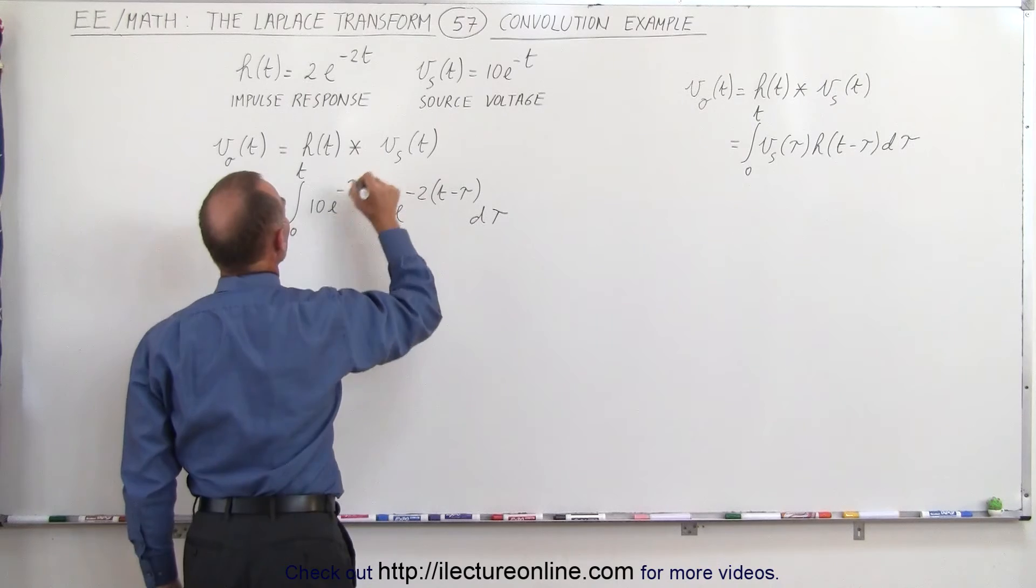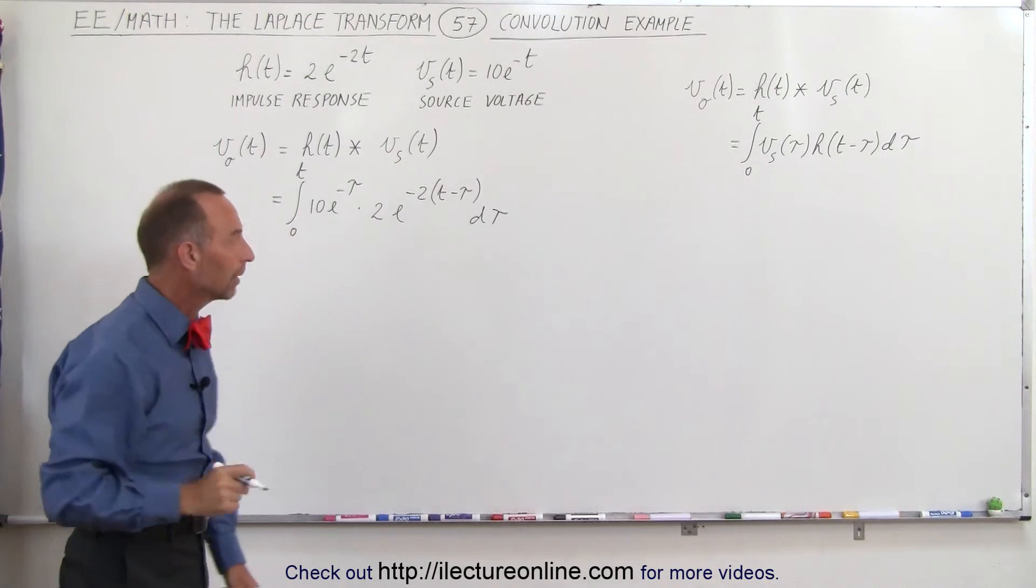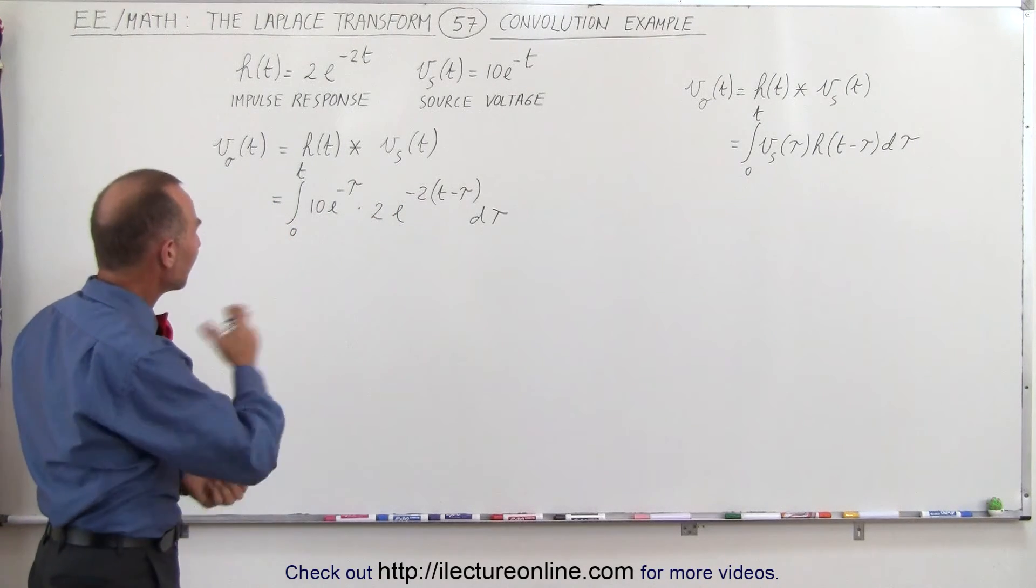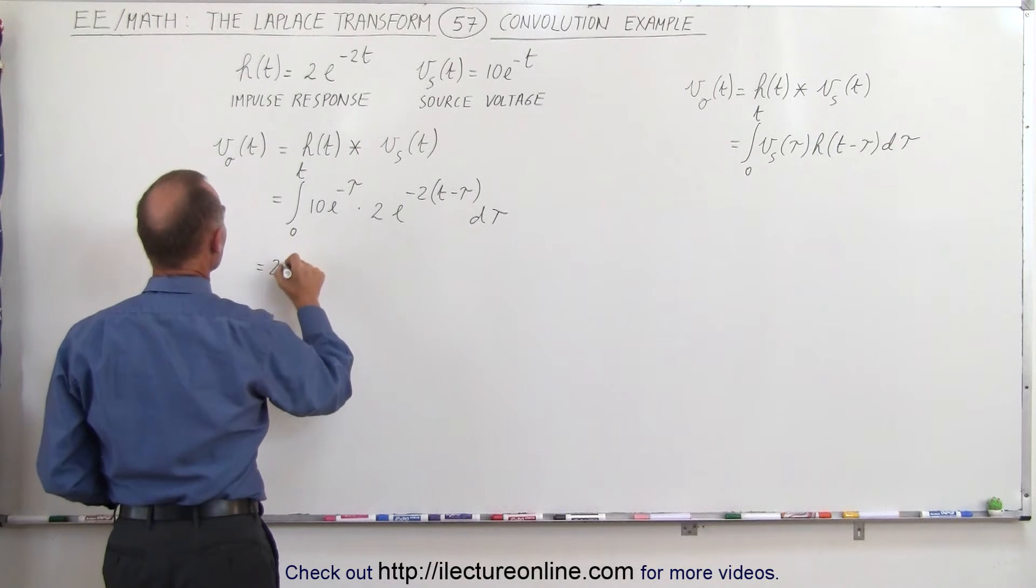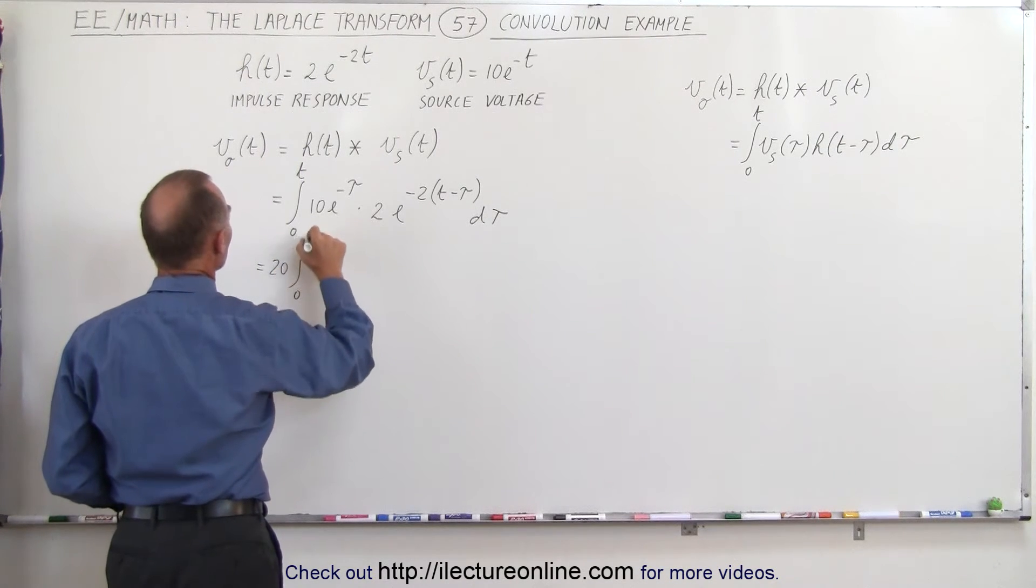Correction here, we're going to use the dummy variable tau, not t. All right. We can factor out a 20, so this is equal to 20 times the integral from 0 to t.